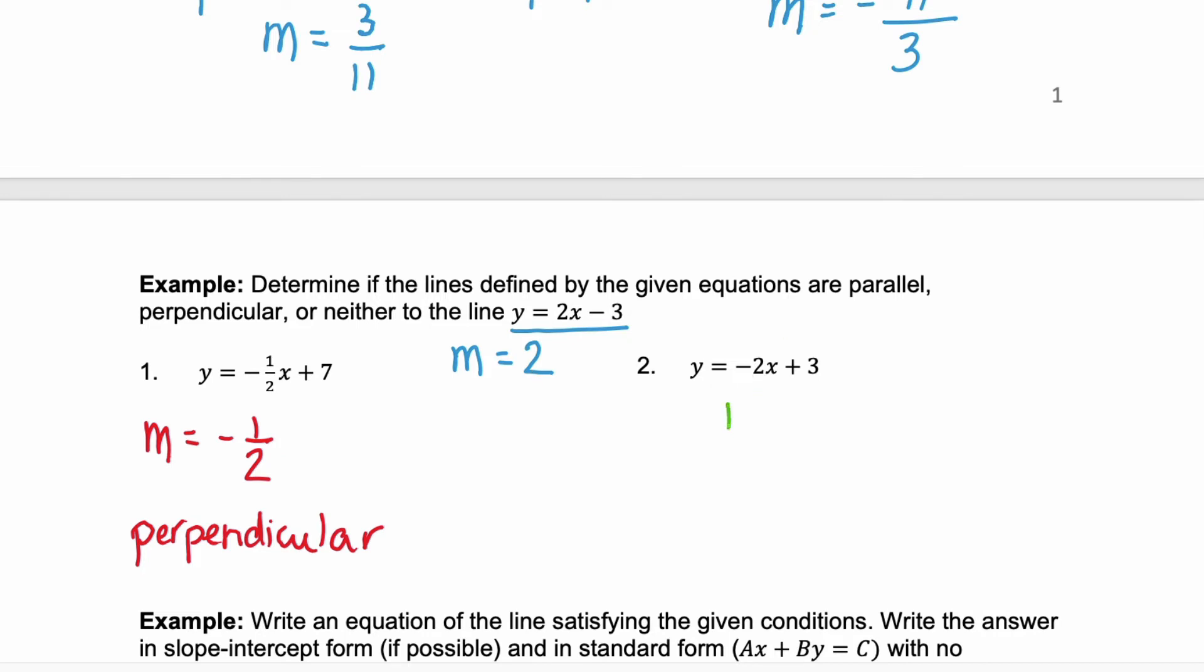In example 2, our slope is equal to negative 2. This is just the opposite of our given slope. So it's not parallel and it's not perpendicular. So we would say that this line is neither. It's neither parallel nor perpendicular.